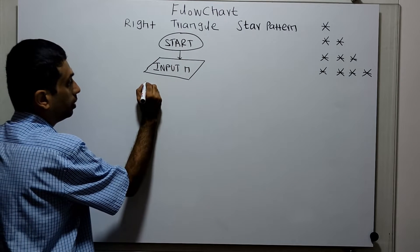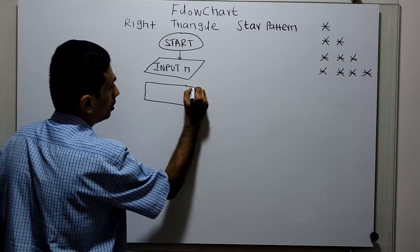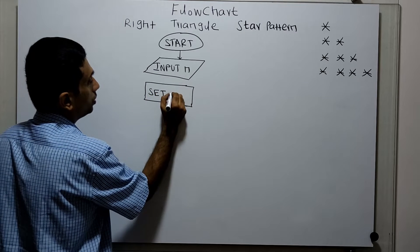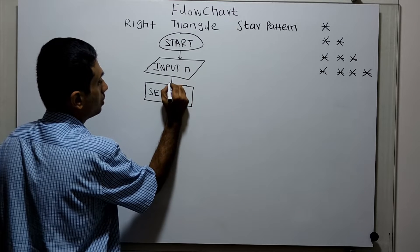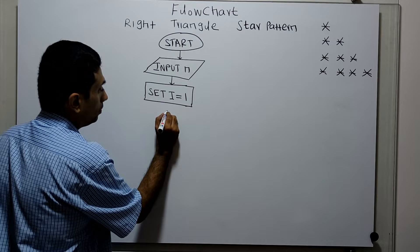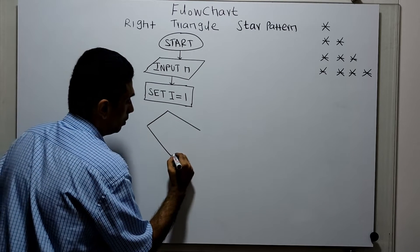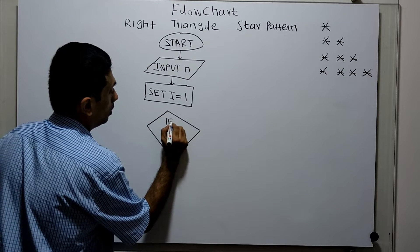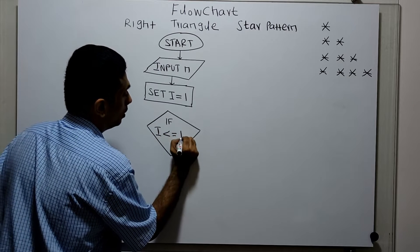I am utilizing a loop variable, which is set to i equal to 1. Here I am checking the condition: if i is less than or equal to n.